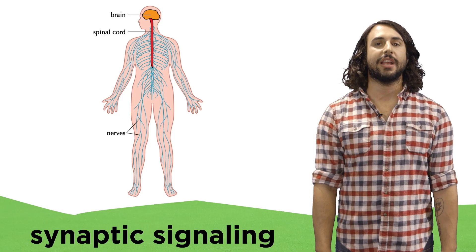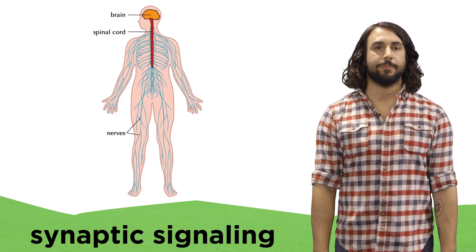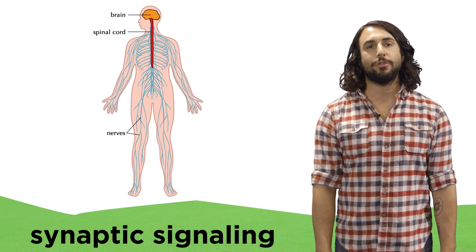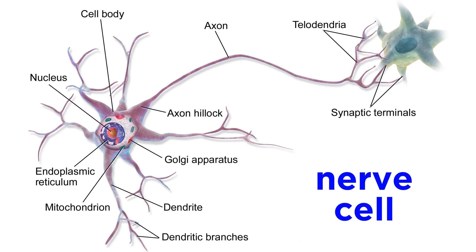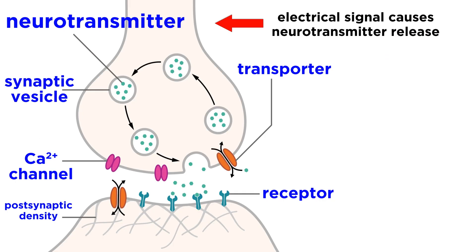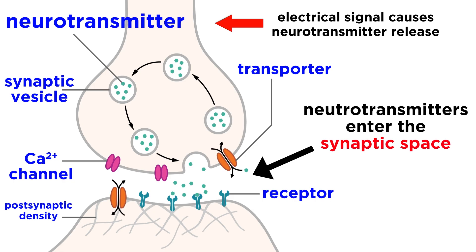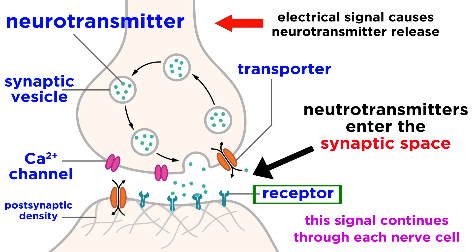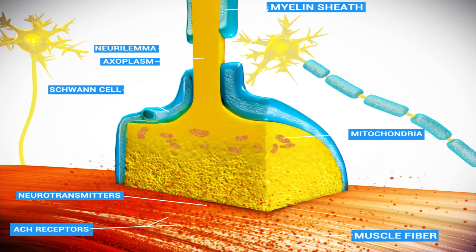Another example of local signaling is called synaptic signaling. This is how messages travel through your nervous system. A nerve cell can be triggered by an electrical signal to release certain molecules called neurotransmitters into the synaptic space, which then interact with the next nerve cell, eliciting another electrical signal, which releases neurotransmitters into the next synaptic space, and so forth. A nerve cell can also be attached to a muscle cell, which makes it able to trigger muscular contraction.